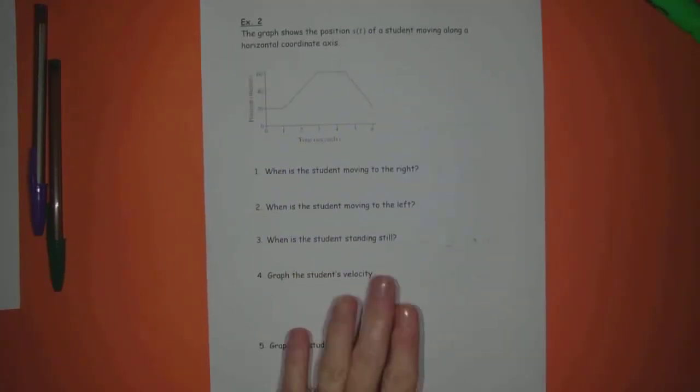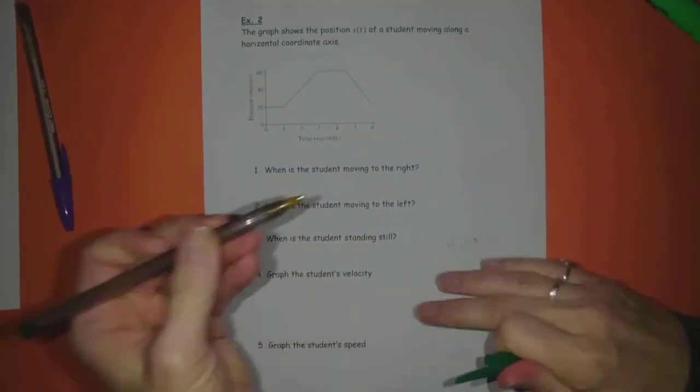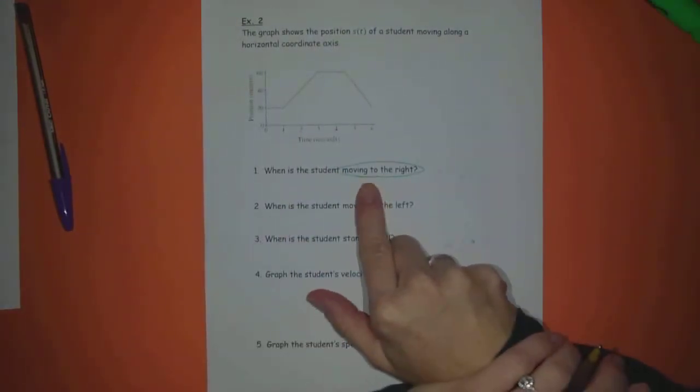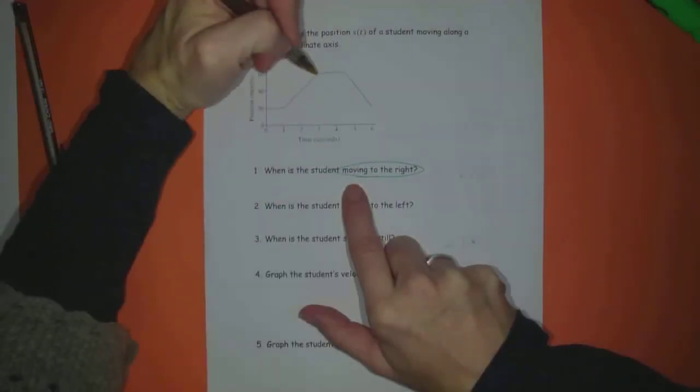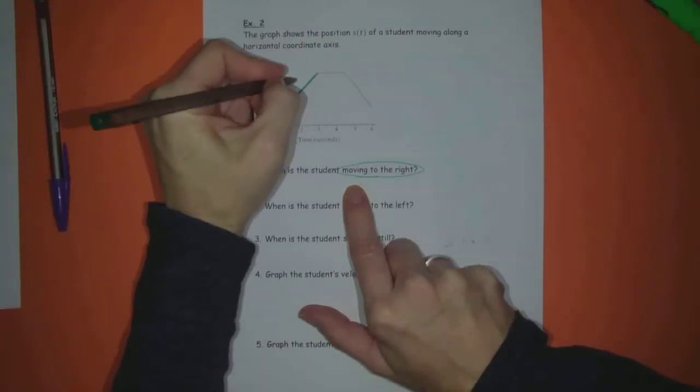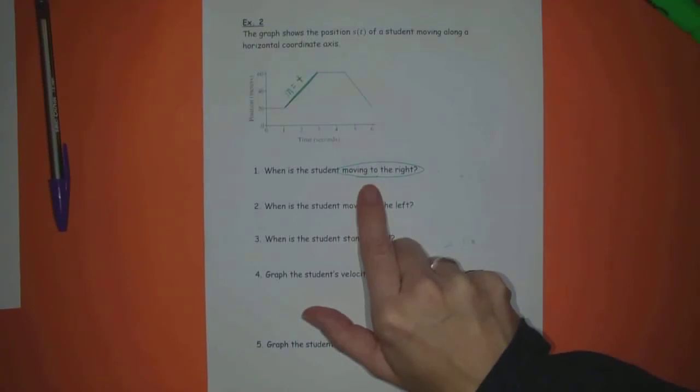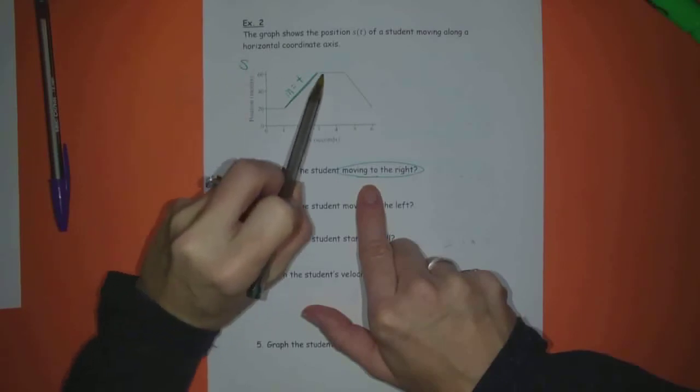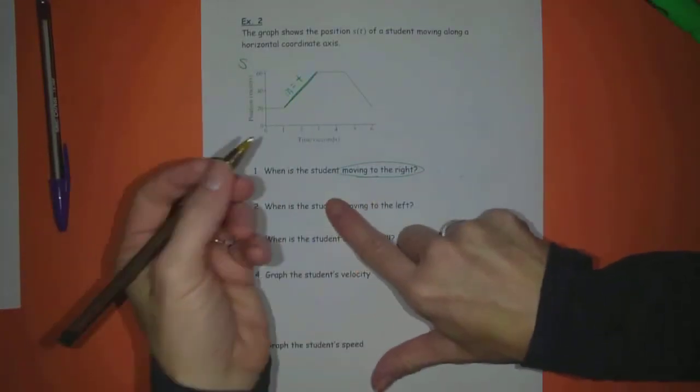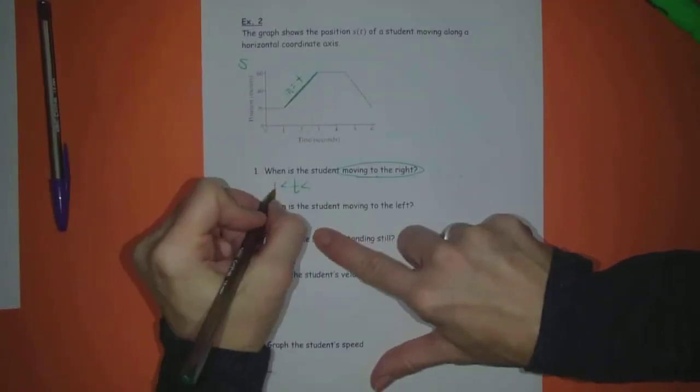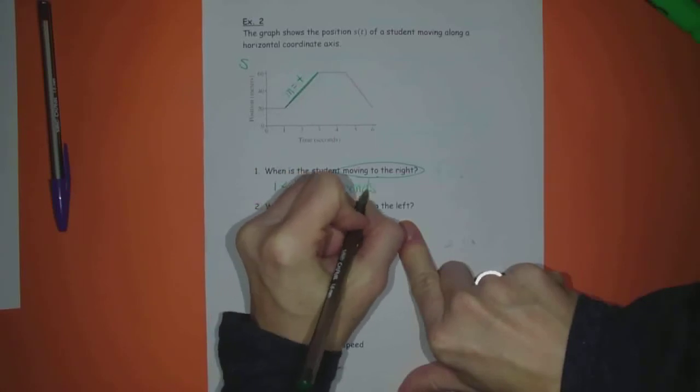But the first question says, when is the student moving to the right? Well, we're moving to the right when the velocity is positive, velocity is the slope of S. So right here, when the slope is positive, the velocity is positive. Remember, this is S. So this is S' is the slope, which is V. So I'm going to say for t between one and three seconds.